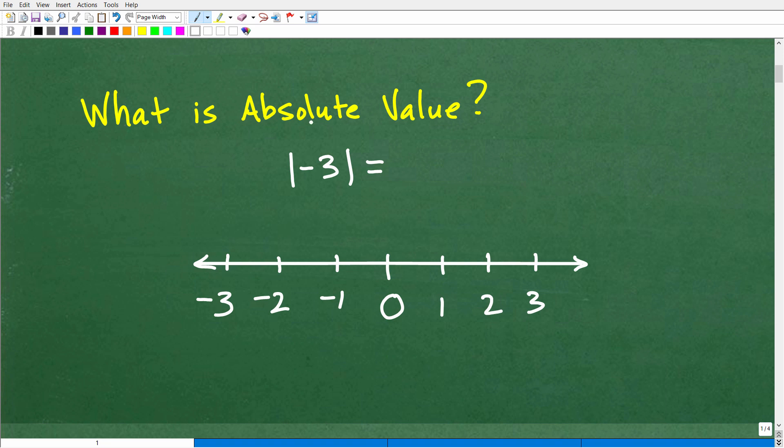Okay, so what is absolute value? Well, absolute value is the distance a number is from zero. So how can I think about it? Well, here's zero, let me actually use a different color. So here's zero, and here's negative three.